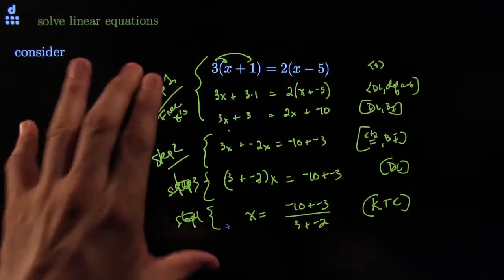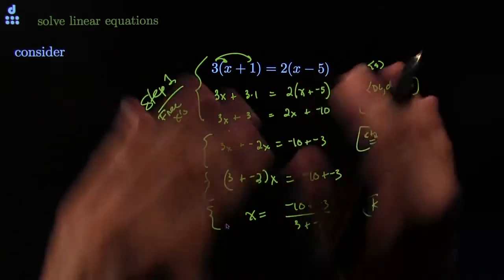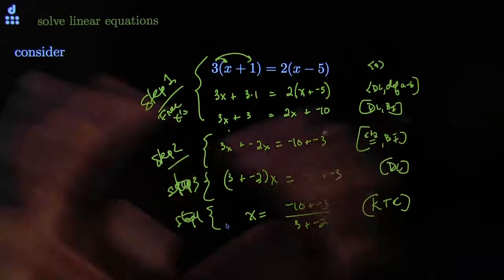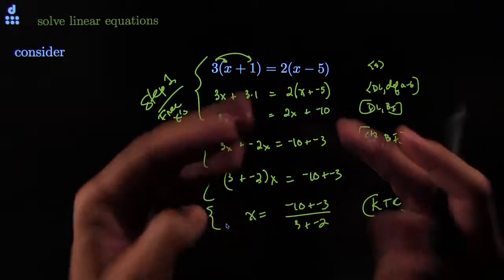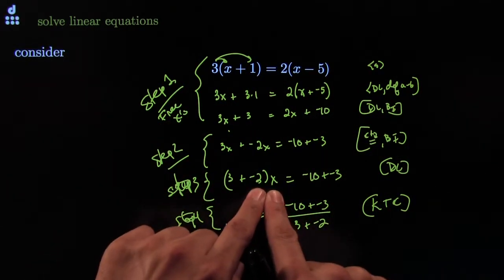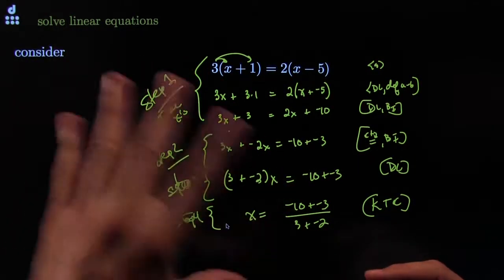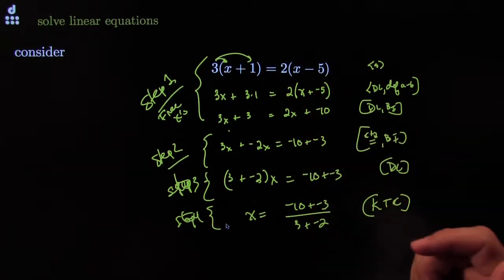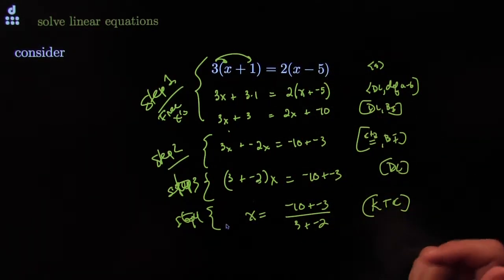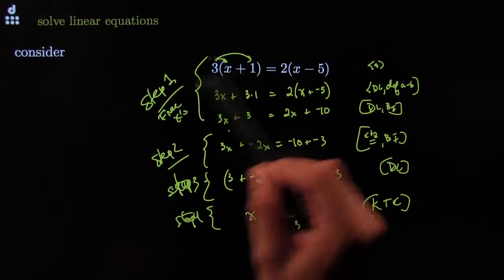Step one, two, three, four — this, my friends, is the winning strategy for all linear equations in the entire universe. If you can free them when they're trapped inside terms, then you can move them around. You can move all the X's to one side and all the non-X items to the other side. If it's a linear equation you can factor out the X, get to step three, and then kill the coefficient. This is the winning strategy — or a winning strategy. You can invent your own; I'm just giving you one procedure that works.